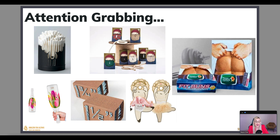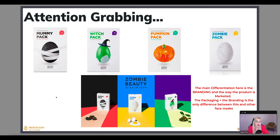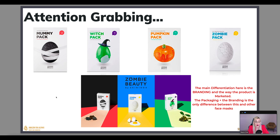A lot of this is very simple products where the packaging has been made attention-grabbing. This is an example of a brand called Zombie Beauty, where the formulas of their beauty products are more or less the exact same as competitors, but their packaging is so unique — so this is both packaging differentiation and branding. Their packaging is super simple white packaging, and while white on white isn't the best scenario for Amazon hero images, it does really stand out because of everything else going on on the packaging.